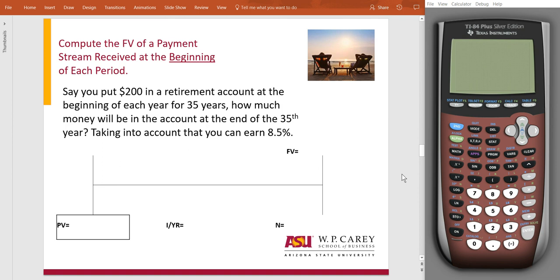So let's go ahead and look at this question and start plugging. It says you put $200 in a retirement account at the beginning of each year for 35 years. How much money will be in the account at the end of the 35th year, taking into account that you can earn 8.5%? So let's draw this out.